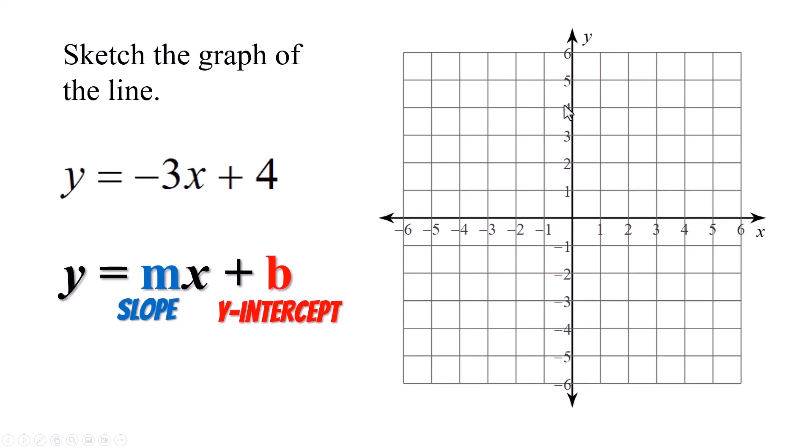Negative 3x plus 4. Your y-intercept is up here on the 4. Your slope is negative 3 over 1. Negative 3 over 1 means you are going to drop 3 and go over 1 and put another point there. Draw the line. This is a negative slope. It's going downhill. That is the equation of the line. Y equals negative 3x plus 4.